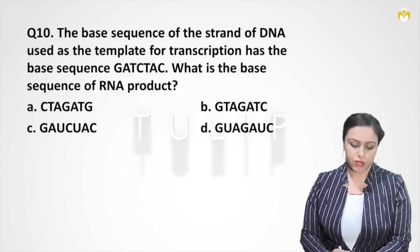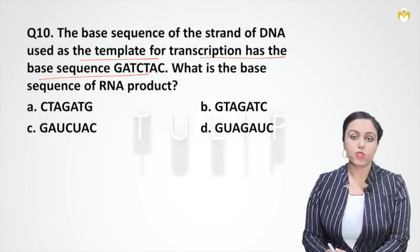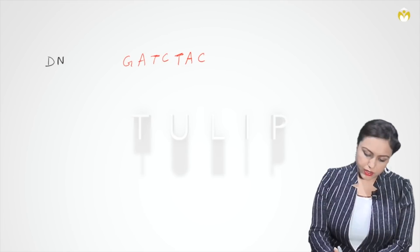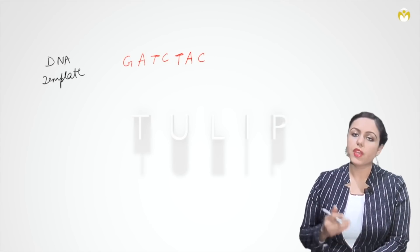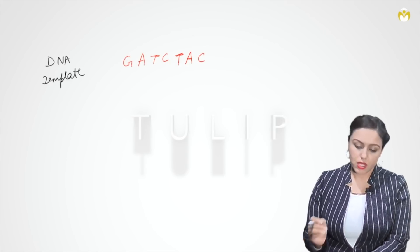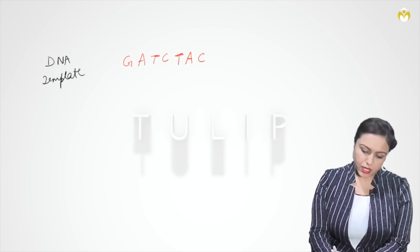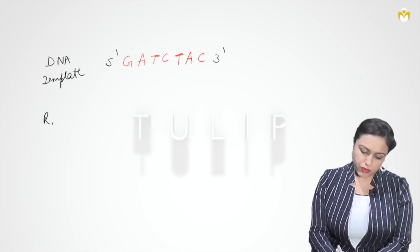Question ten: the base sequence of the strand of DNA used as template for transcription has a given base sequence — what is the base sequence of the RNA product? This DNA template strand sequence is given. When transcription occurs, RNA will be formed using this DNA as a template. When a sequence is given in the question without writing direction, the left side is five-prime and the right side is three-prime.